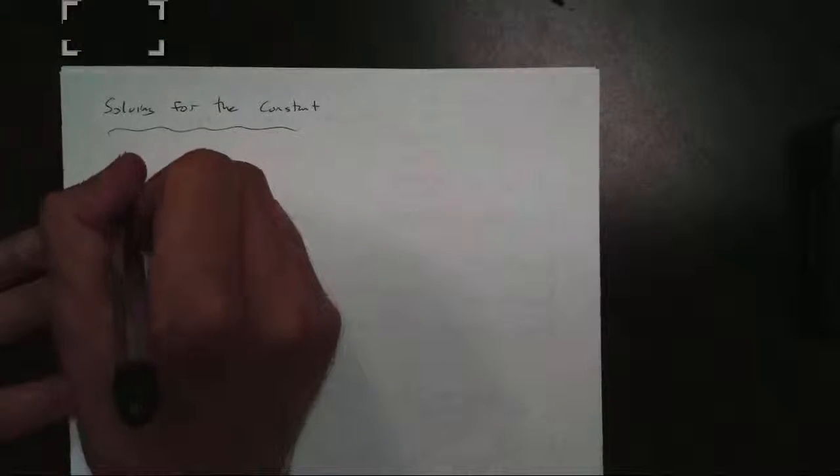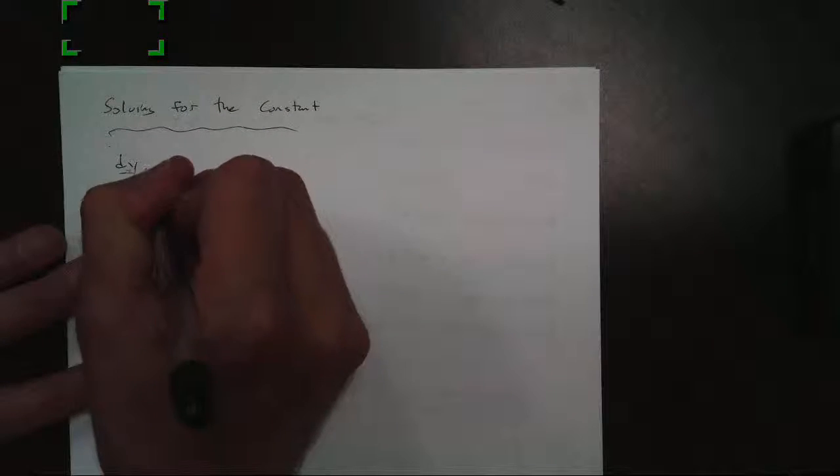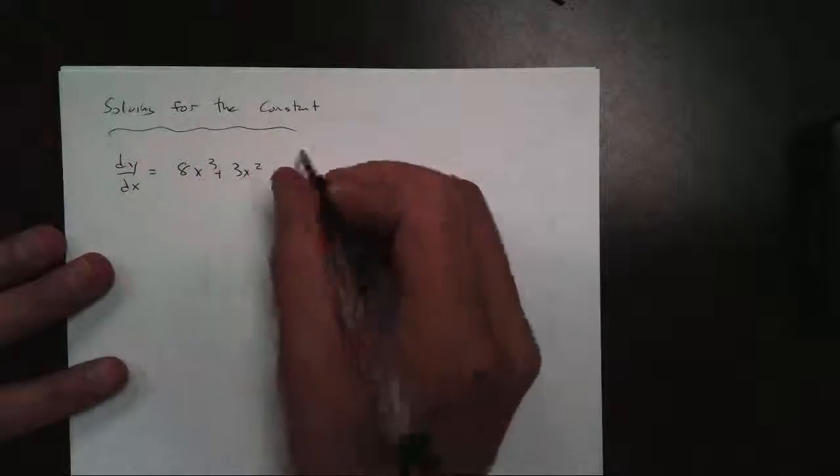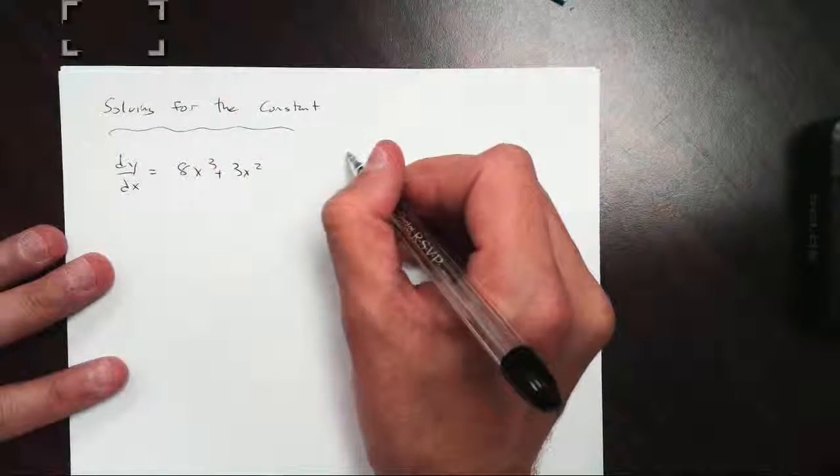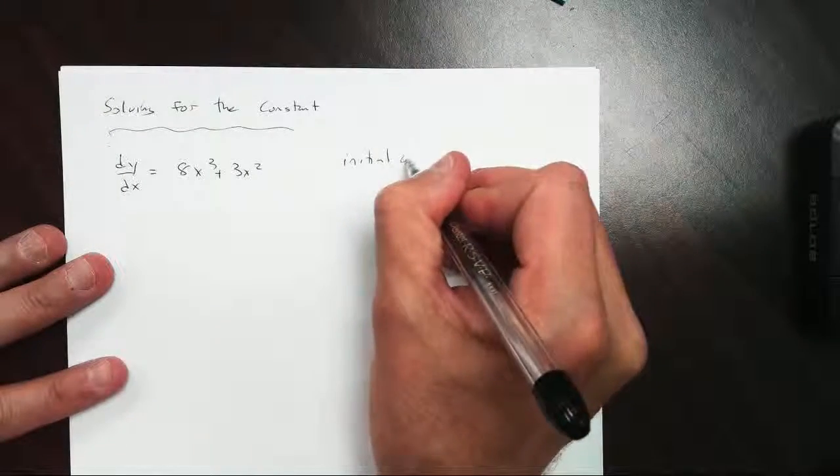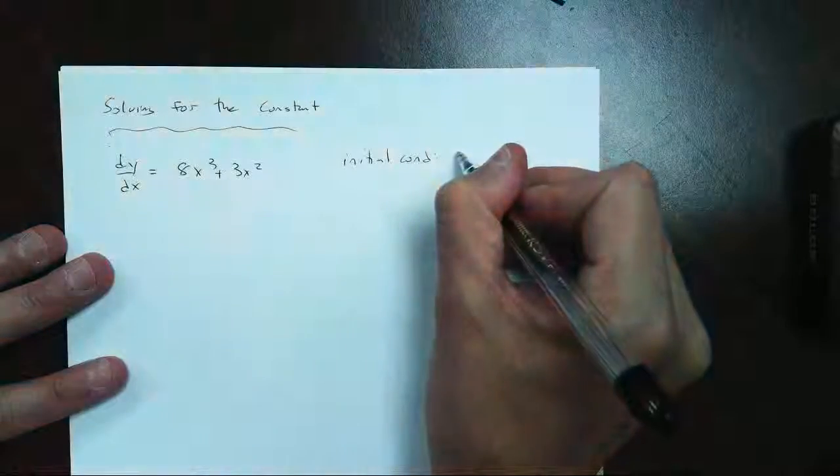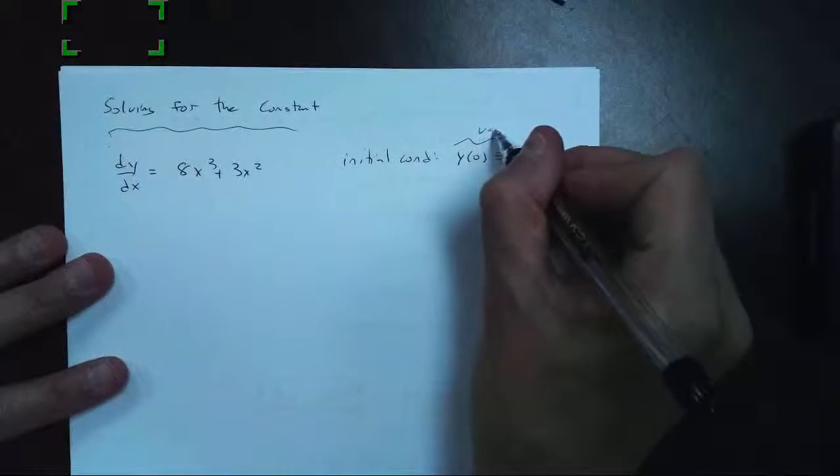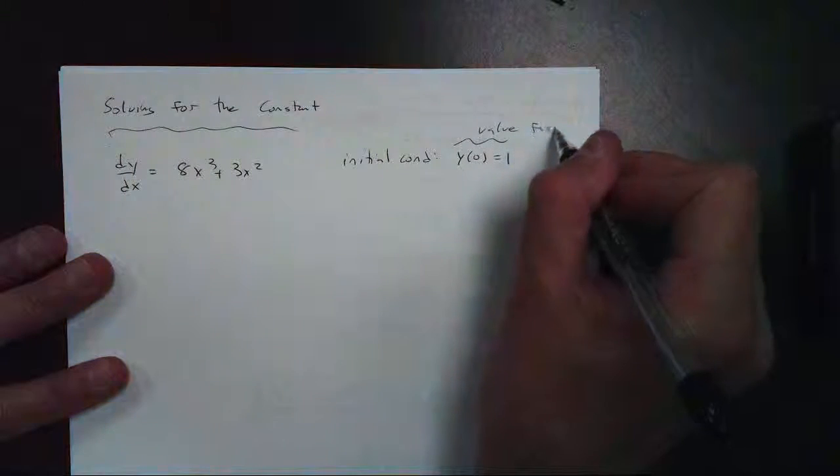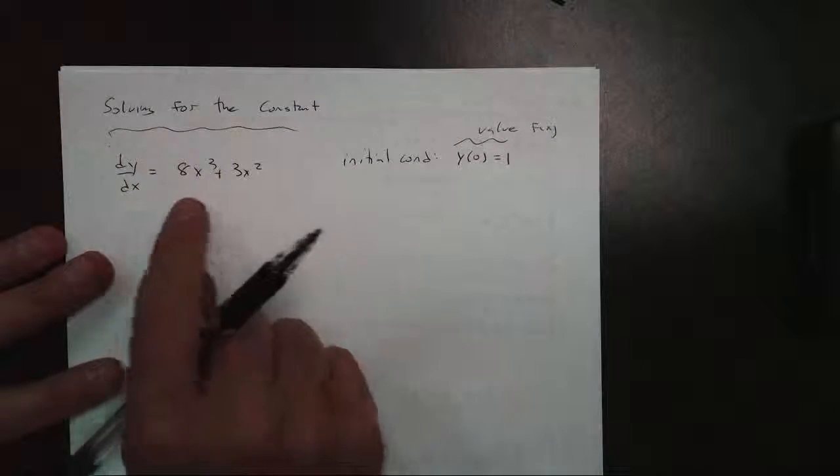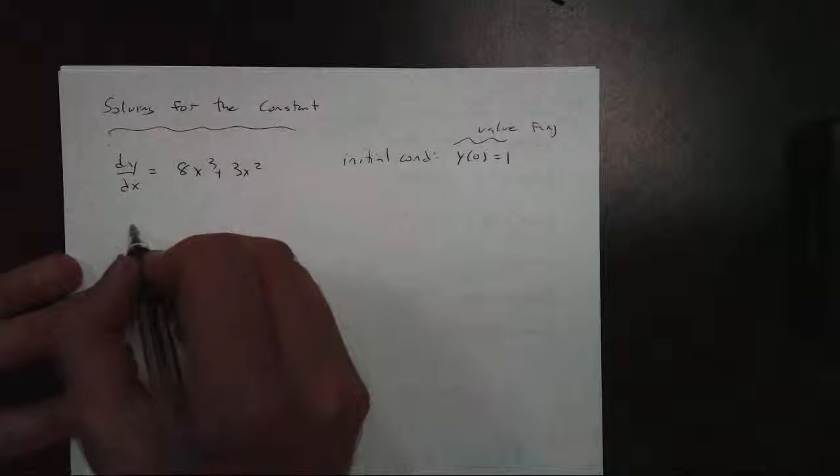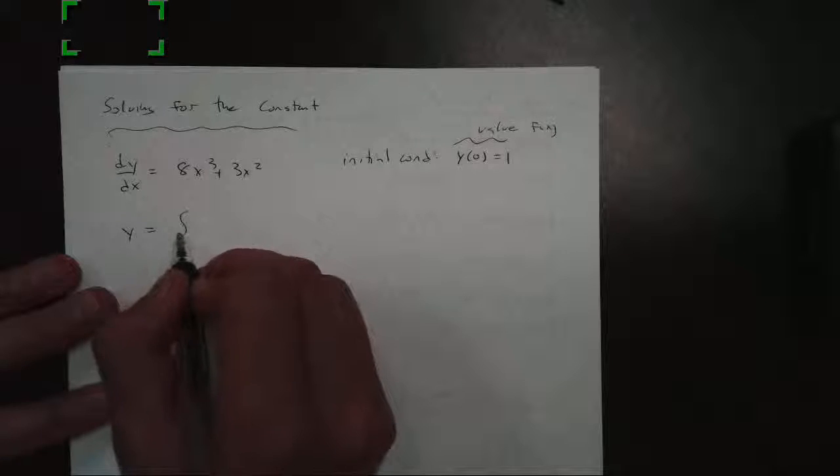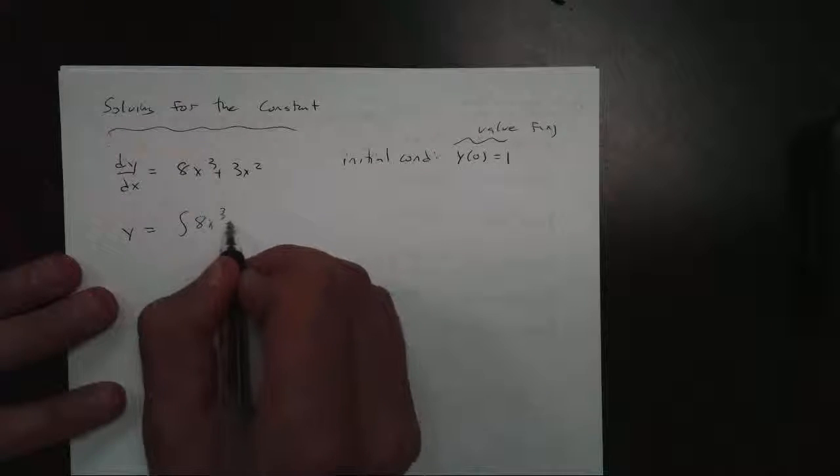Let's say we have a function. Its derivative, dy/dx, is 8x cubed plus 3x squared. And I know its initial condition such that the value at 0 is 1. Now notice, this is dealing with the value, the function itself, but I only know its derivative. So what I'm going to do is I'm going to take the antiderivative. To find y, remember this is my derivative, right? To find y, I take the antiderivative of this function.